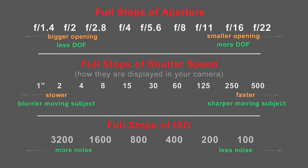When you take a picture of a moving subject, you want to use faster shutter speeds. The faster the subject is moving, the faster the shutter speed you will need to freeze the action. The ISO influences the quality of the image — the lower the ISO, the less noise you'll get.